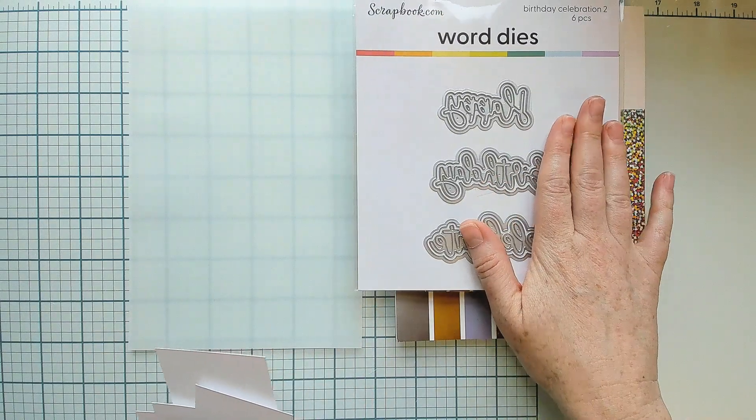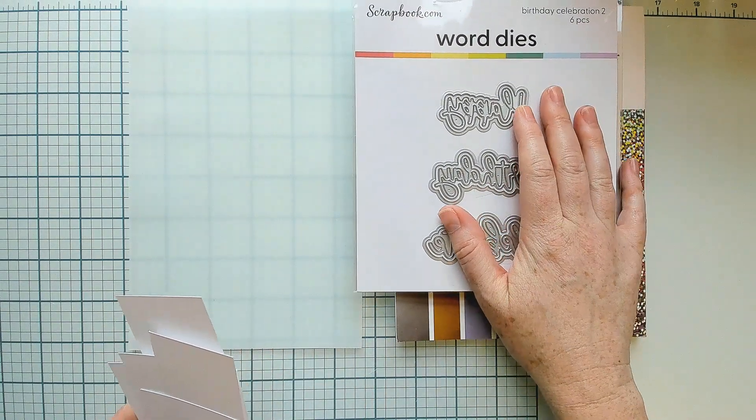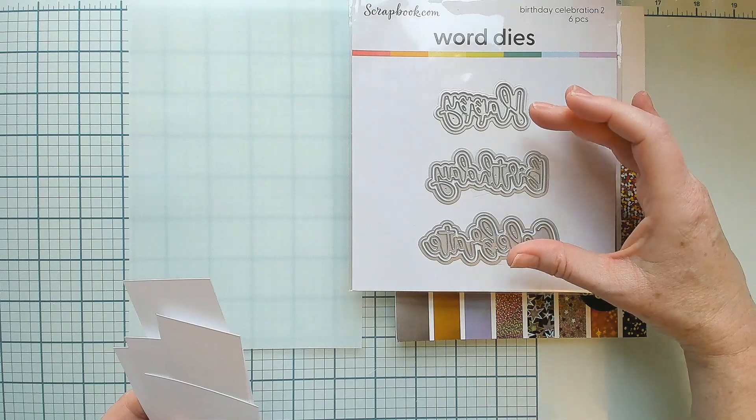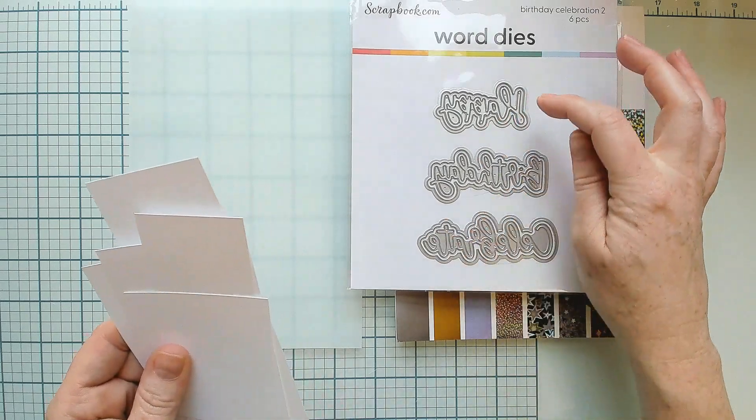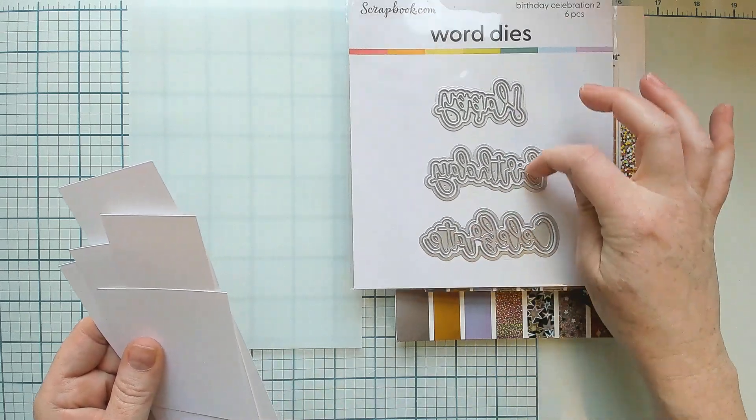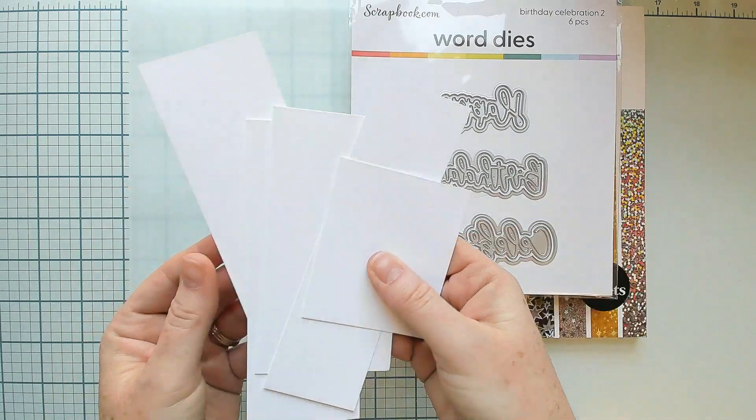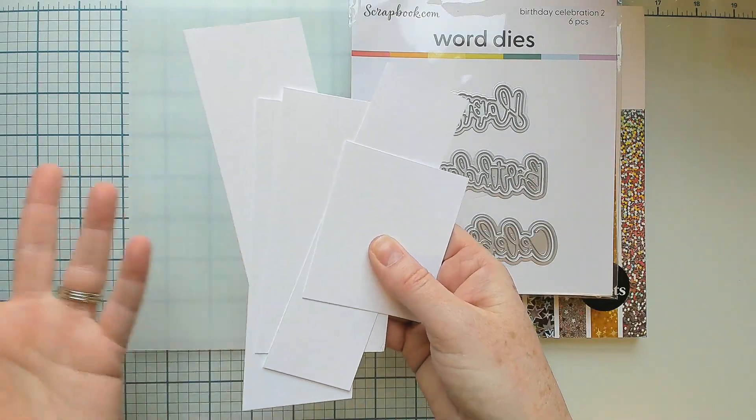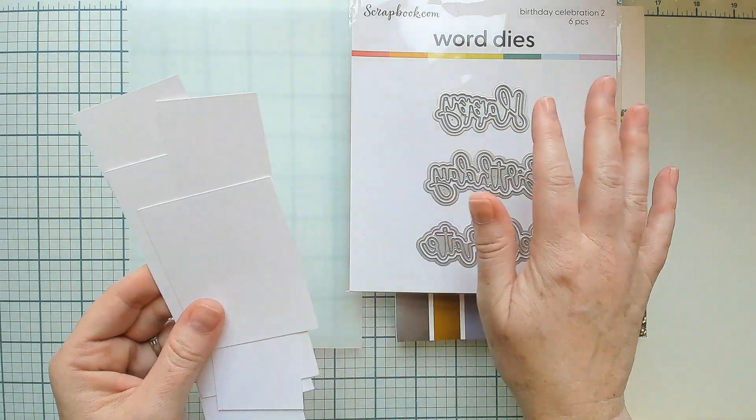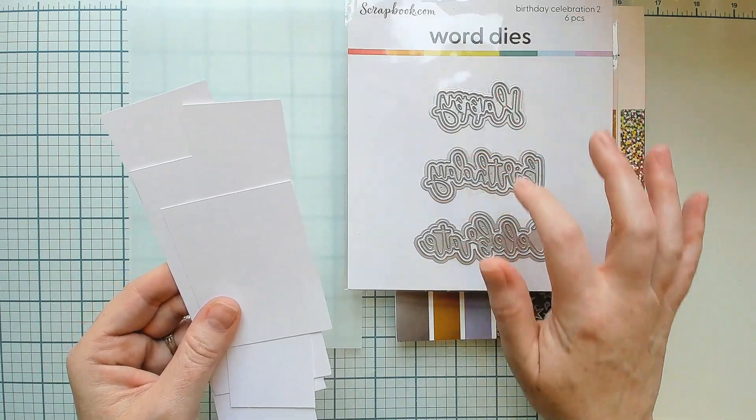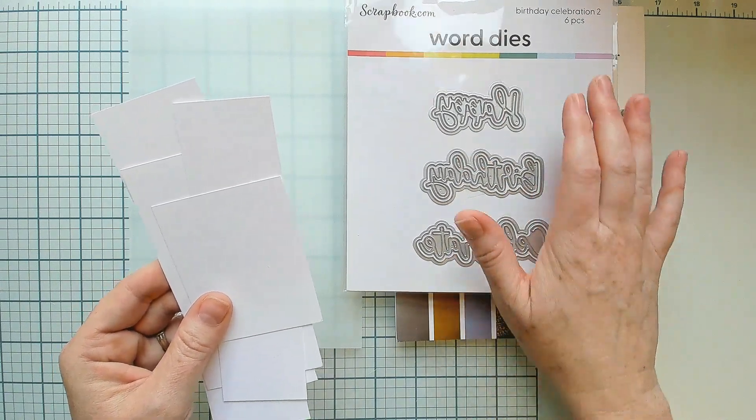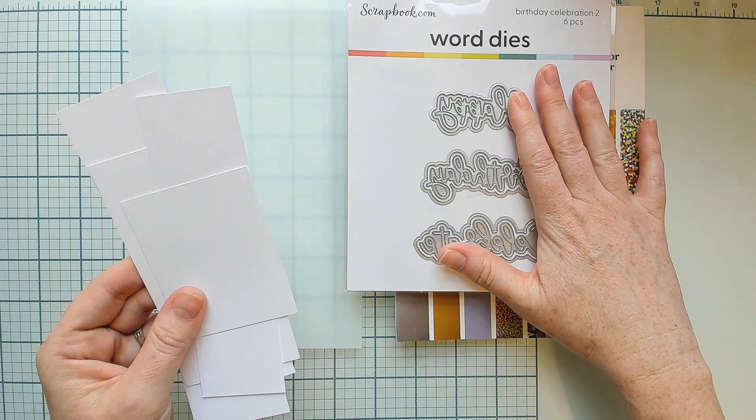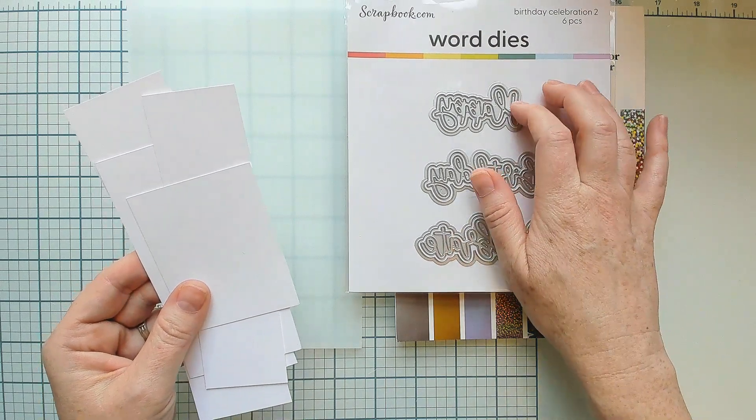I will also stack my sentiments. You'll notice when you see them in class that they will be stacked. I will cut the inner or the actual word dies from some scrap white cardstock. I'll probably cut each word two more times, and I'll ask you to have them already stacked and glued together for class as well.